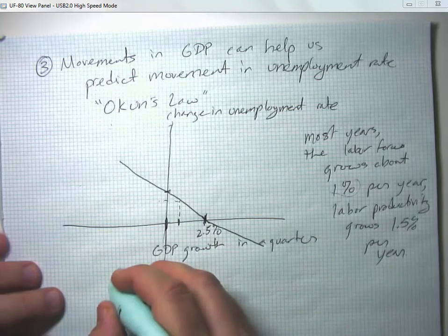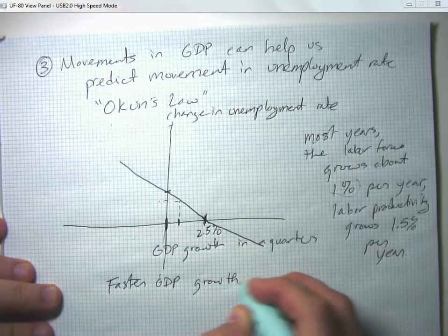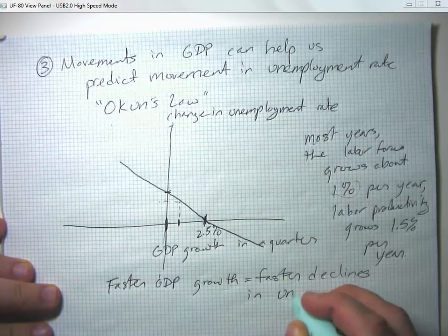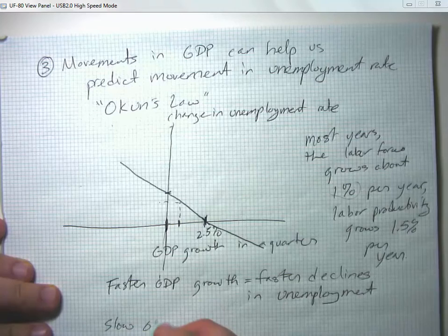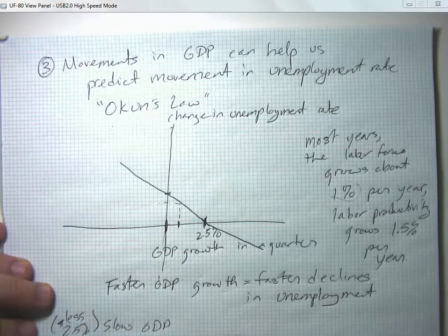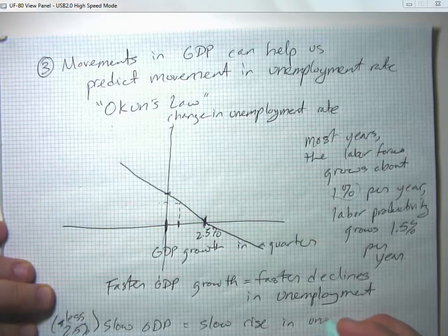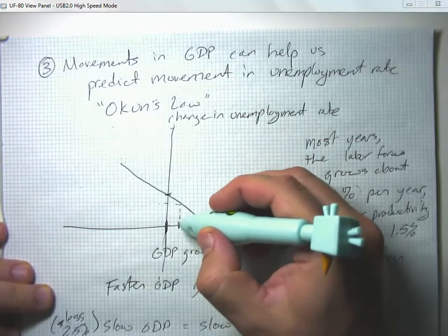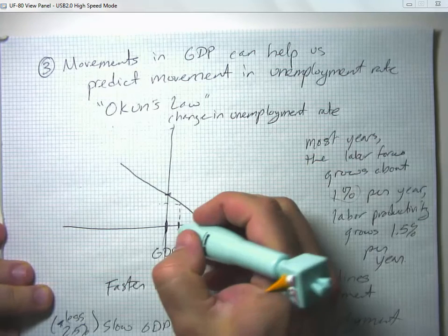To put it simply: faster GDP growth equals faster declines in the unemployment rate. Slow GDP growth — below 2.5% — means a slow rise in unemployment. We can essentially have a recession, or what would certainly feel like a recession, even with relatively slow but positive growth.